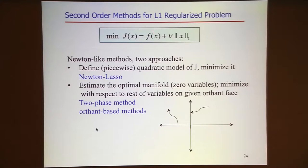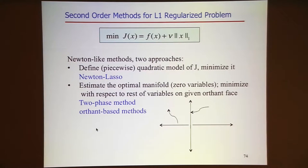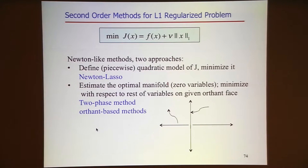I'm going to present two general approaches for tackling the regularized problem. We can rewrite it as f(x) plus the L1 norm. The Newton-like methods I like for this problem come in two brands. One of them I'll call the Newton-Lasso method—in nonlinear programming it would be called the sequential quadratic programming method. What it does is make a piecewise quadratic approximation to that problem and compute an approximate step of this piecewise quadratic model.